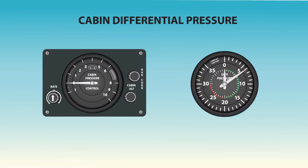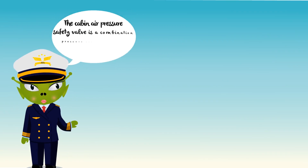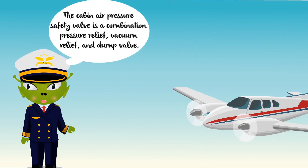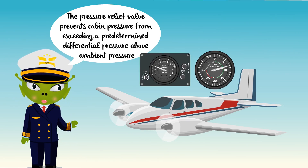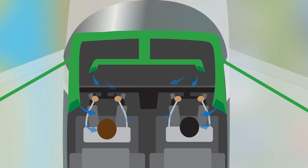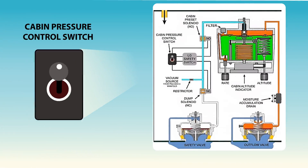The fuselage's ability to withstand a particular maximum cabin differential pressure also limits the operating altitude of the aircraft. The cabin air pressure safety valve is a combination pressure relief, vacuum relief, and dump valve. The pressure relief valve prevents cabin pressure from exceeding a predetermined differential pressure above ambient. The vacuum relief prevents ambient pressure from exceeding cabin pressure by allowing external air to enter the cabin when ambient pressure exceeds cabin pressure. The flight deck control switch actuates the dump valve.